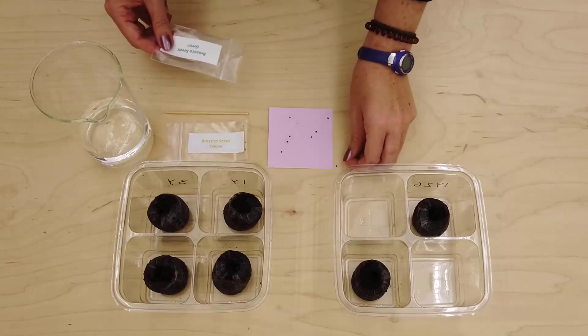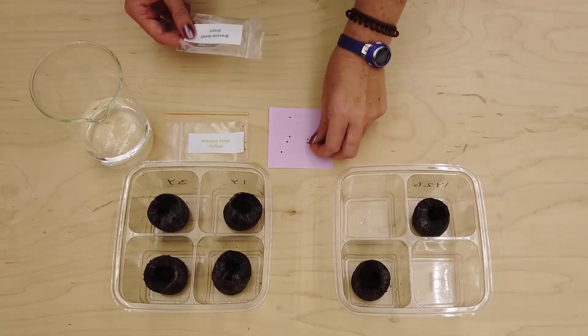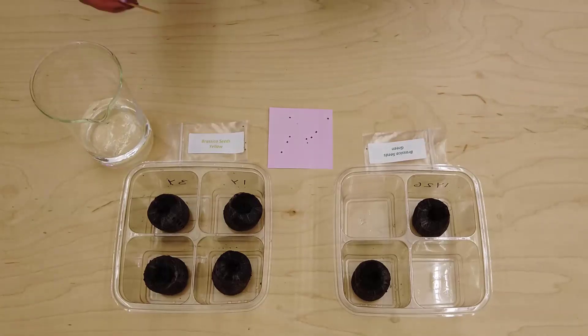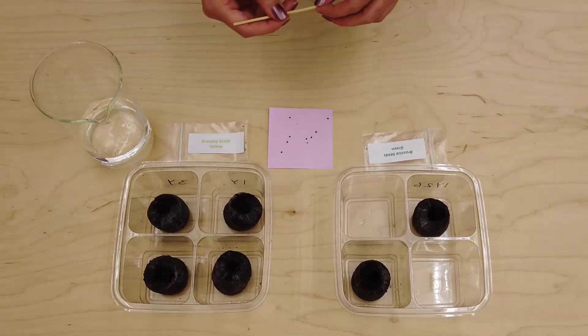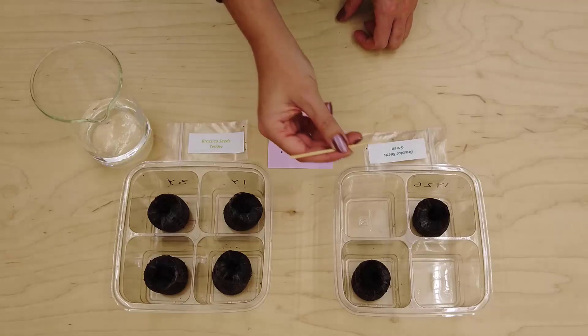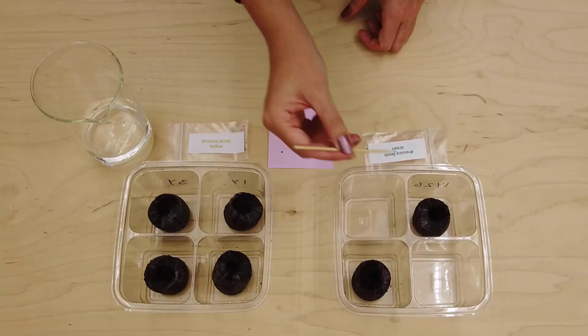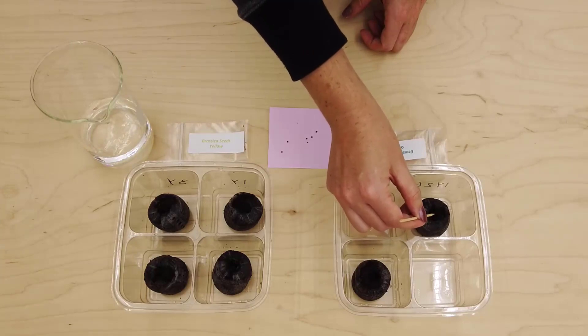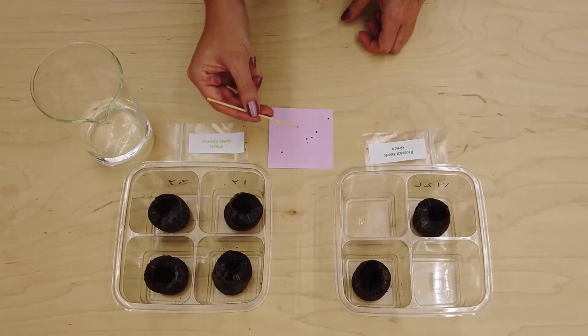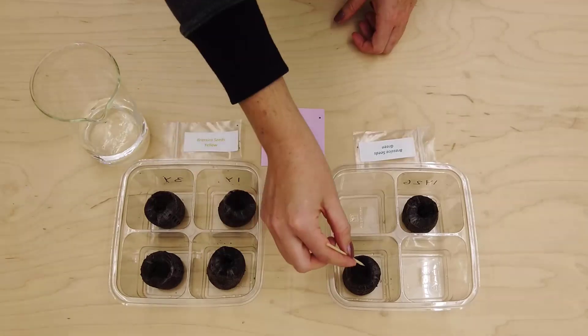To plant the seeds, wet the tip of the skewer and then press the side, not the pointy bit, gently against a seed. It will stick to the skewer. Push the seed lightly into the soil and then push a bit of the soil over it to keep the seed moist. You may also make holes in the soil with your skewer and drop your seeds in. Choose whichever method is easiest for you.